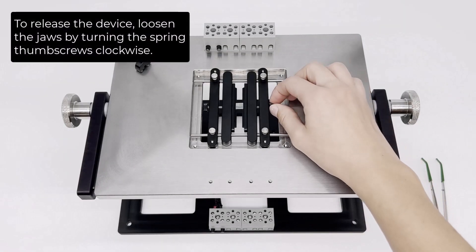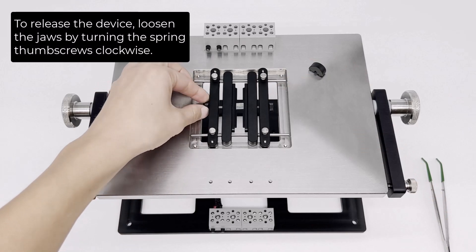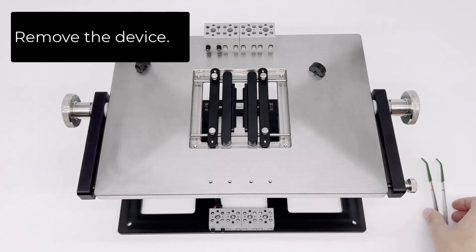To release the device, loosen the jaws by turning the spring thumb screws clockwise. Remove the device.